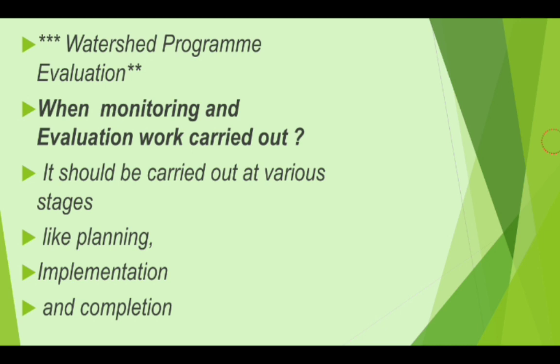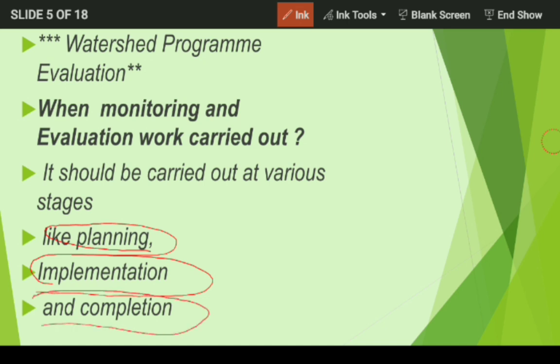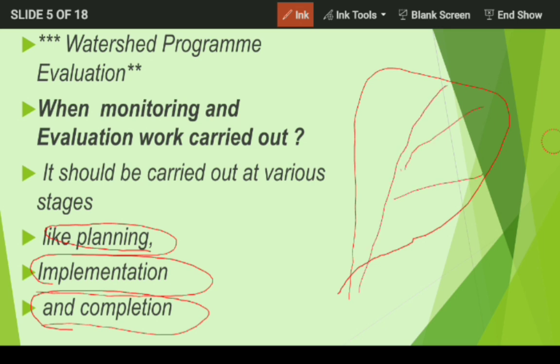When is monitoring and evaluation work carried out? It is carried out at various stages: planning stage, implementation stage, and completion stage. Monitoring and evaluation is necessary at the planning stage when preparing a project plan. Once we prepare a project plan, implementation work follows, where we perform different treatments in the watershed area like gully plugs, check weir, and check dam.